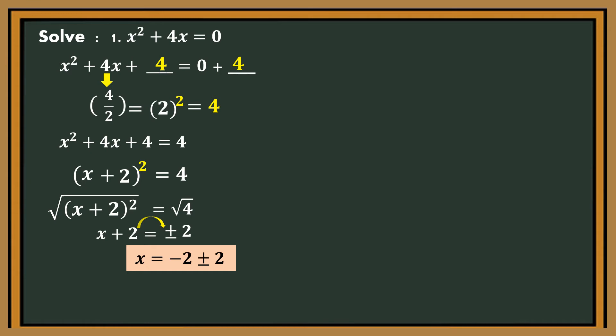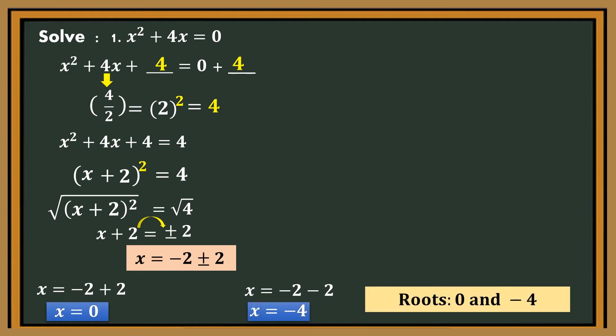Let us separate the equations. First, x is equal to negative 2 plus 2, then x is equal to 0. Second equation: x is equal to negative 2 minus 2, therefore x is equal to negative 4. What are the roots or solutions of the equation? The roots or solutions are 0 and negative 4.